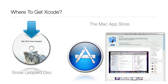You may be wondering where to get Xcode. First, you can only use Xcode on a Mac — you cannot use it on a Windows computer. One option is the Snow Leopard install disk: pop it into your Mac and you can install Xcode from there. However, that version is not the latest — if you want the latest version, which is Xcode 4, you'll need to download it elsewhere.